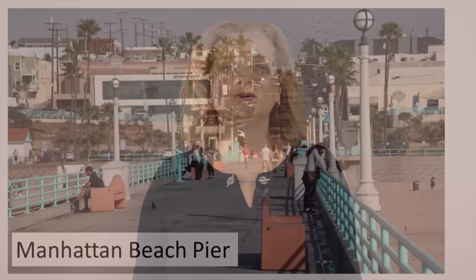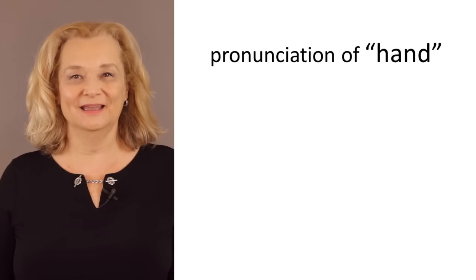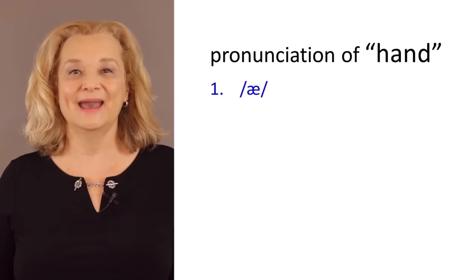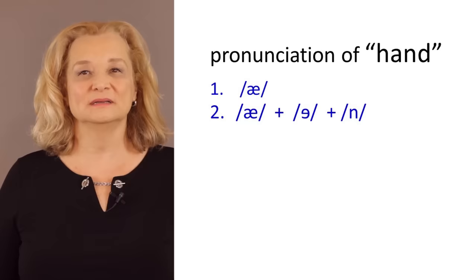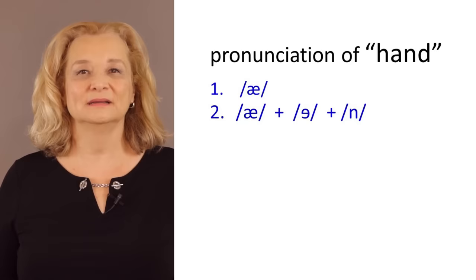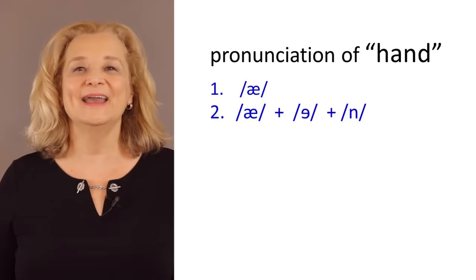Before you learn the expressions with the word hand, I want to make sure that you can pronounce hand perfectly. There are three things to pay attention to. The first thing is the 'a' sound — hand. And because the 'a' is followed by an N, which is a nasal sound, we need to add a little extra schwa sound, a little 'uh' sound between the 'a' and the N. So we don't say 'hend.' It's hand.